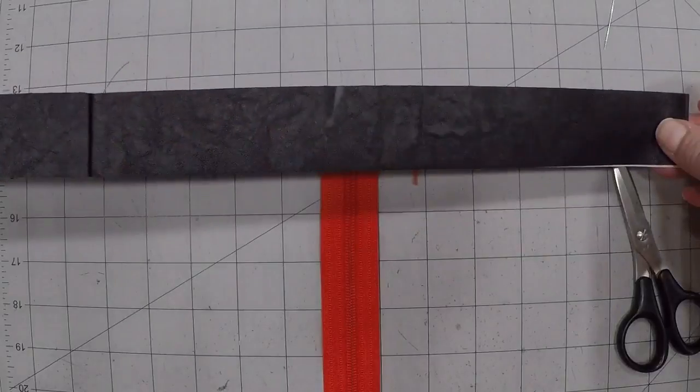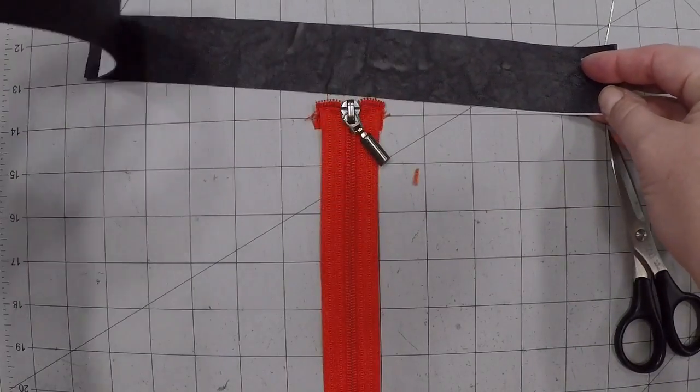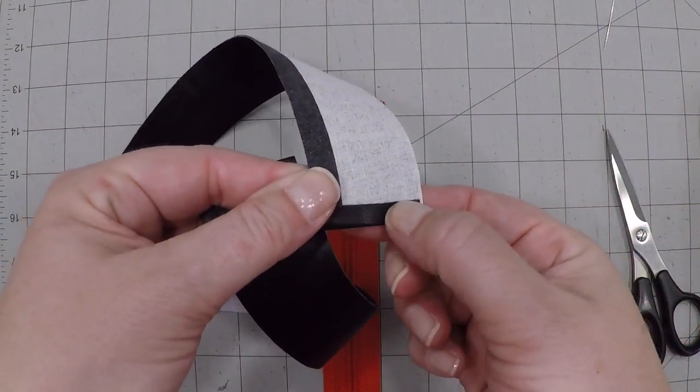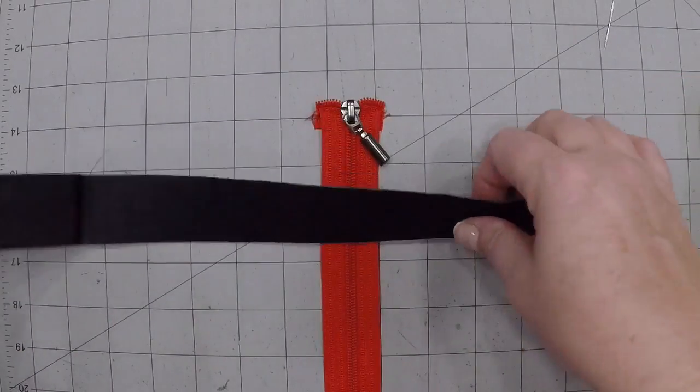This is my two, oh what do they call them, zipper panels I think they call it. Normally you fold both edges in a quarter inch and then do your sewing.